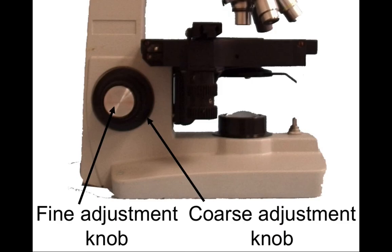The lenses are set up to focus on an individual point. Therefore, when viewing structures under the microscope, it is imperative that our stage is in the right place at that focal point. That's what we use two knobs for — we'll have the coarse adjustment knob on the outside and the fine adjustment knob in the center. The coarse adjustment knob is the outer portion, and the fine adjustment knob projects out from the coarse adjustment knob as well.